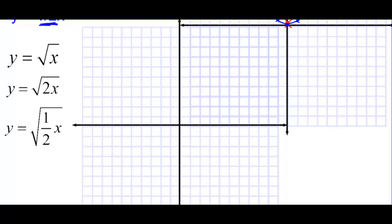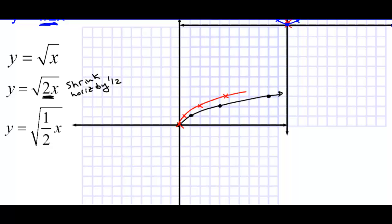Here we have y equals the square root of x. Starting with 0, 0; square root of 1 is 1; square root of 4 is 2; square root of 9 is 3. When we multiply 2 on the inside, we shrink horizontally by a factor of one half. So we take all these x-values and multiply by one half: half of 1 is one half, half of 4 is 2, half of 9 is 4 and a half.